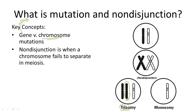And if a cell is missing an entire chromosome, this is called monosomy. 'Mono' means one, so you can think of it as only one homologous chromosome in a diploid organism — in other words, the diploid count is short one chromosome.